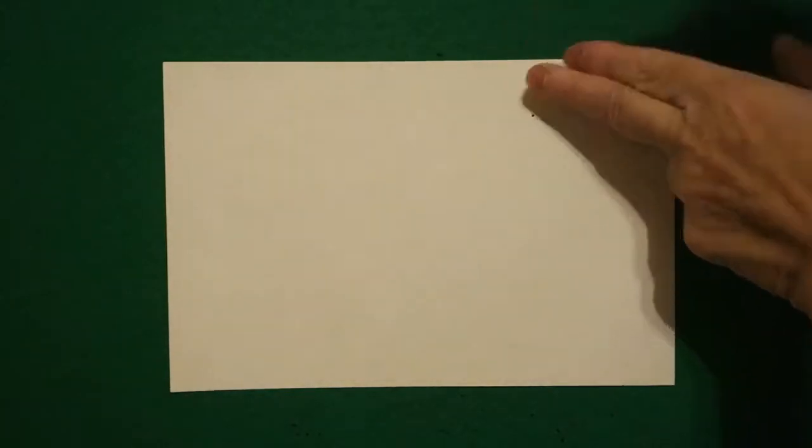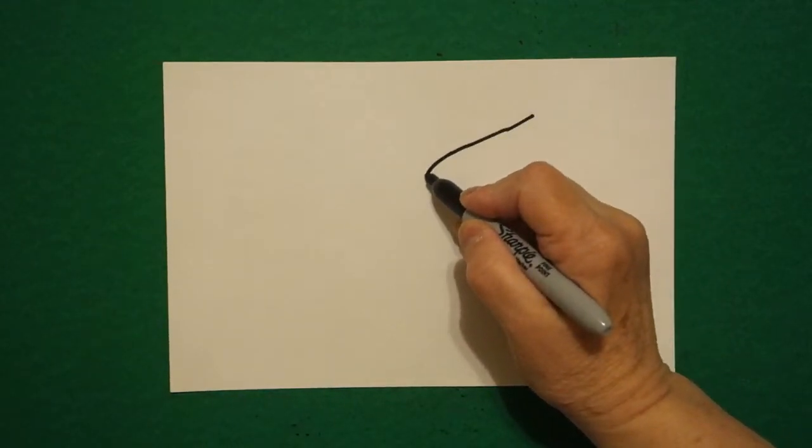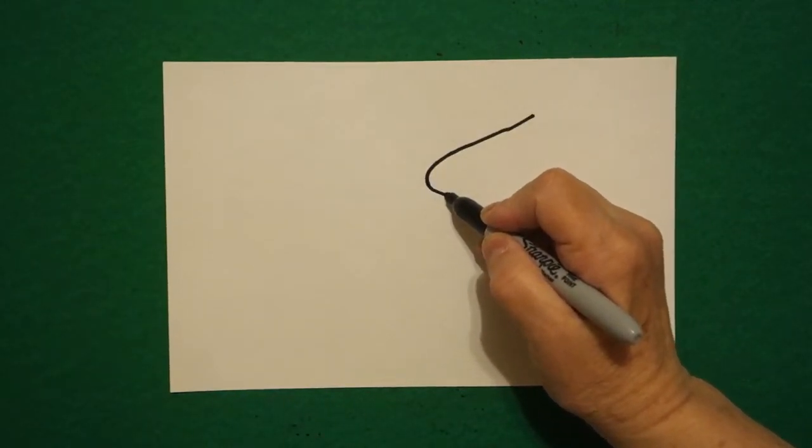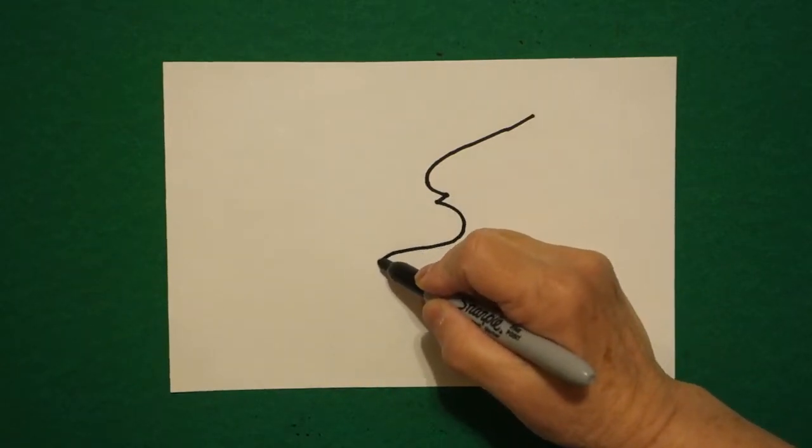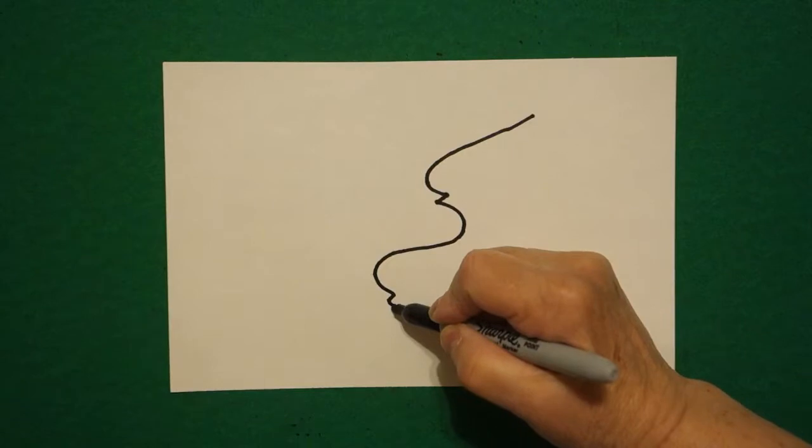I take two fingers over here on the right and I put a dot. And from that dot I'm going to draw a curve line down, in, out, curve line down, in, out.